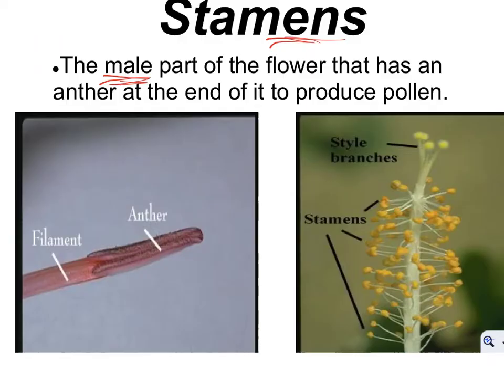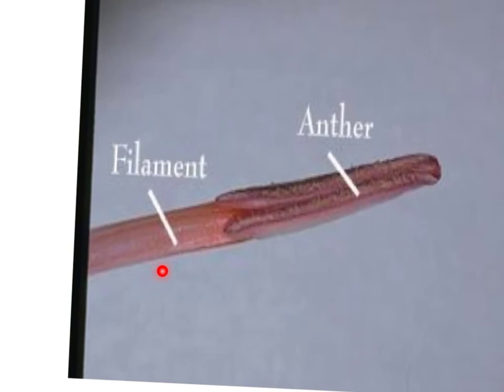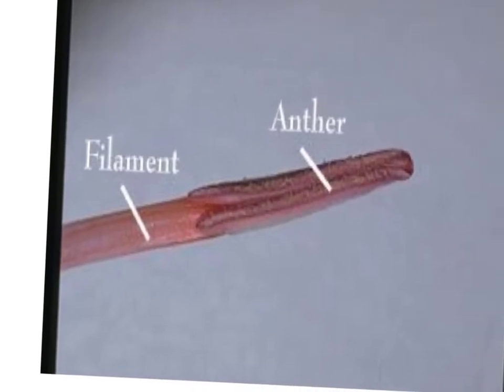Your stamen is the male part of the flower. It has an anther at the end to produce pollen. If you look at the picture, you have your anther and your filament, and the pollen is located right at the edge. Think of a bee rubbing along there — it's getting food from it, but it also helps pollinate. That's called a mutualistic situation: the bee gets energy, the flower gets to reproduce, so they both benefit.